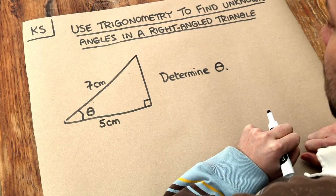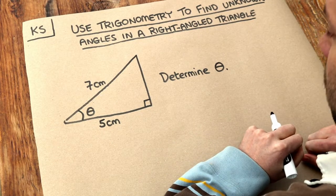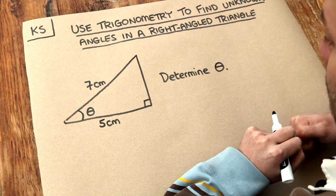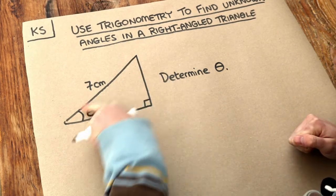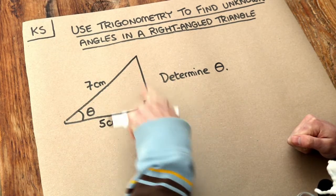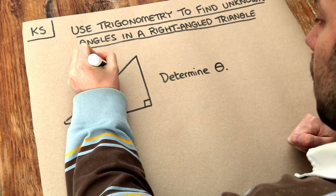We do exactly the same thing as with any other right angle trigonometry problem. The first step is always to identify the sides involved. We're involving this hypotenuse here - it's the longest length opposite that right angle. So let's label with H for hypotenuse.